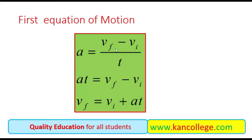ΔV is actually Vf minus Vi. If we move the T variable to the left side by cross multiplication, then At = Vf − Vi, and by moving Vi to the left side, Vf becomes equal to Vi + At. This is the simple proof of the first equation of motion.